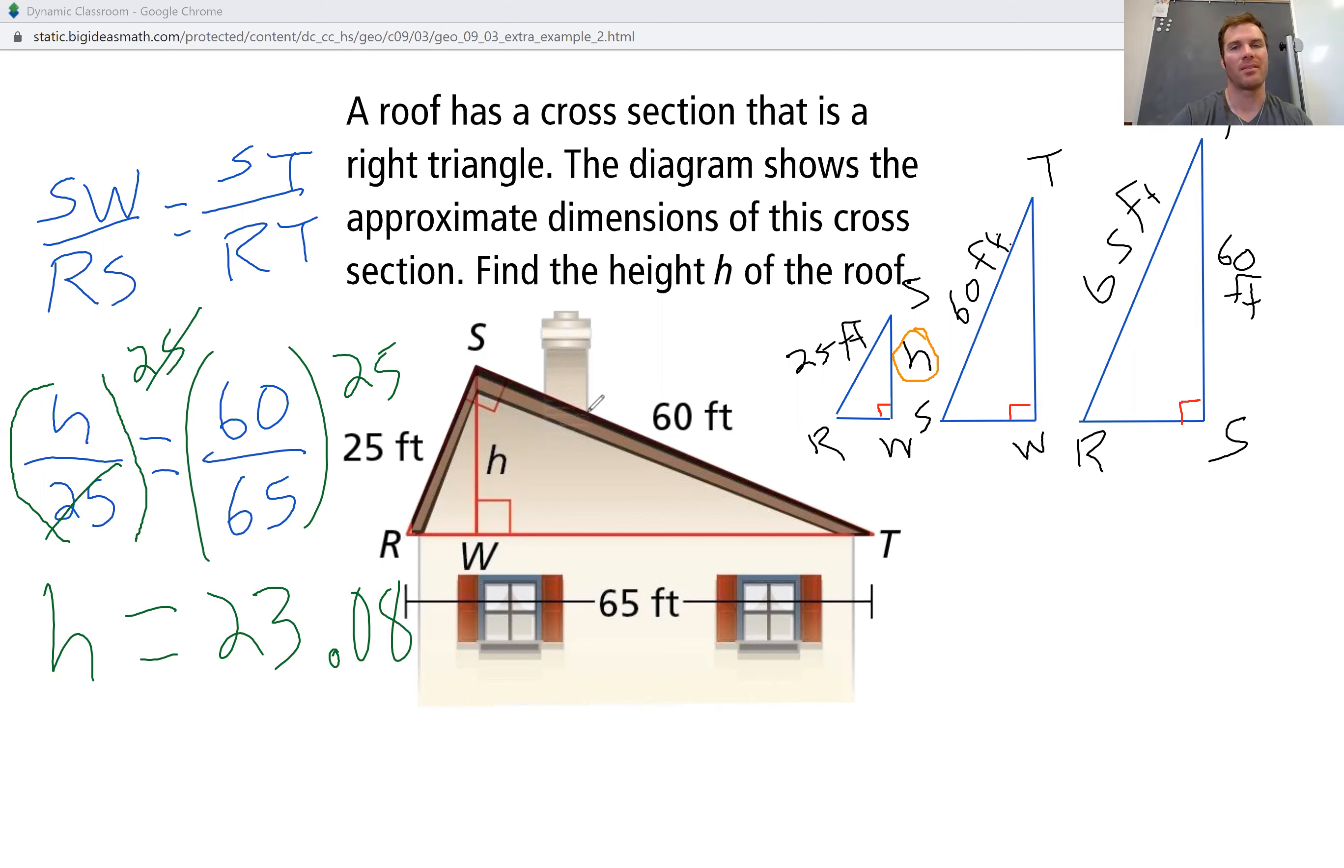You know what? Let's round it to the nearest tenth. It doesn't say, but let's just round it to the nearest tenth. That would be better. So it's 23.1. And you can't forget to write feet. You must write feet or else your answer will be wrong. So our height is 23.1 feet.